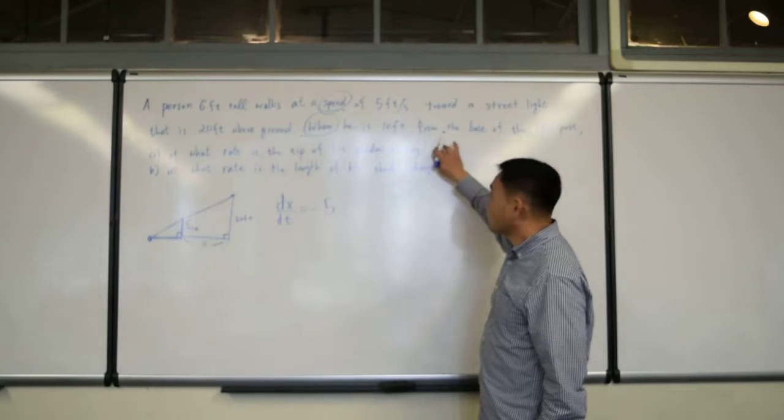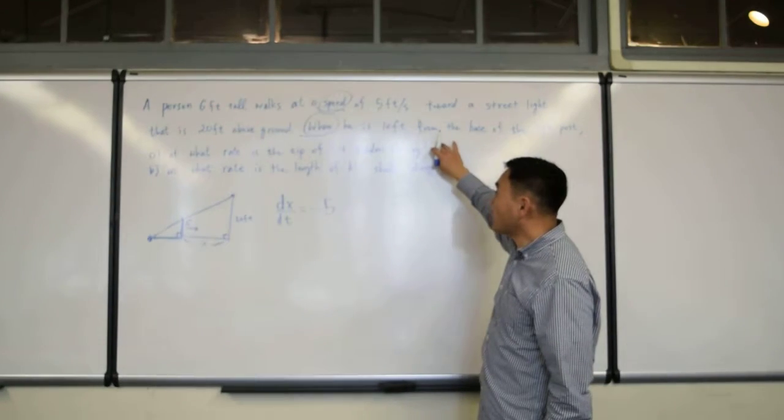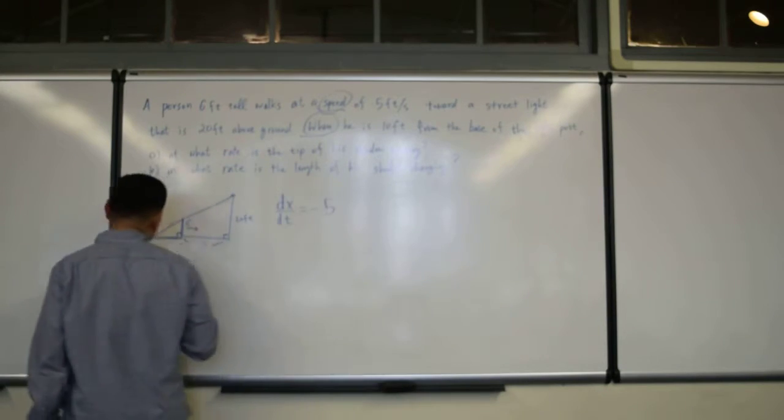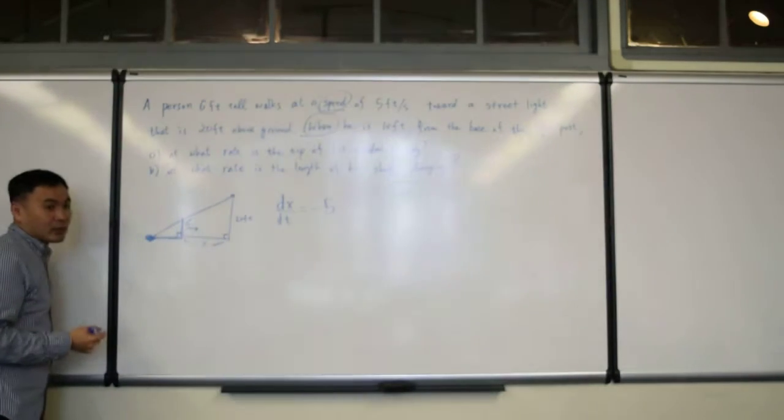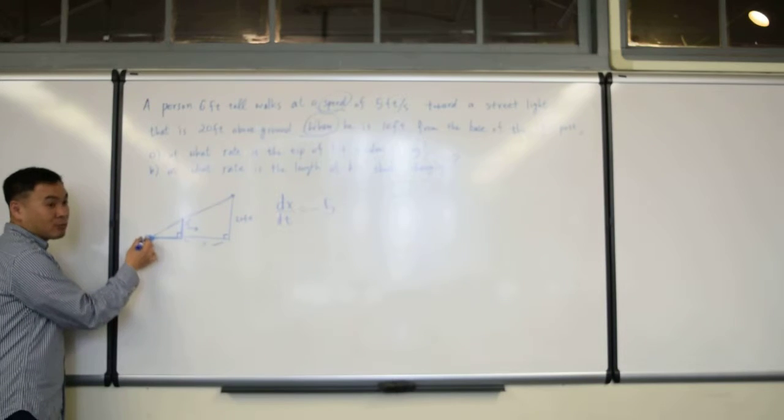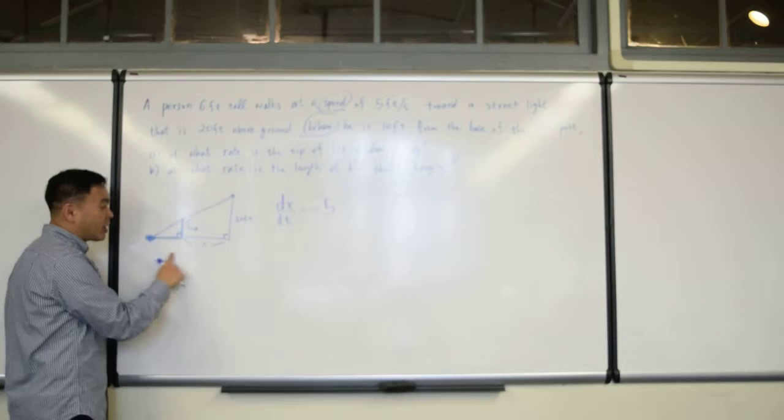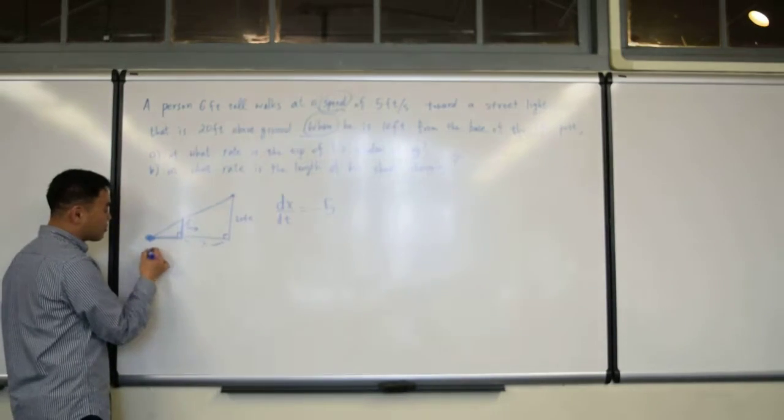Alright, now let's try to do question A. At what rate is the tip of his shadow moving? Well, tip of his shadow is right here. And again, in order to figure out how fast it's moving, you have to figure it out from the distance from a fixed object.